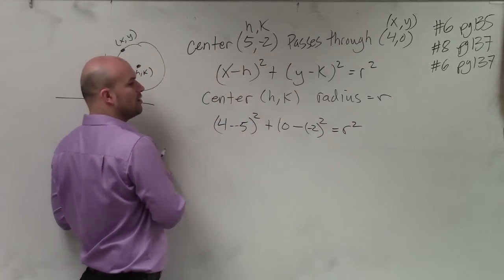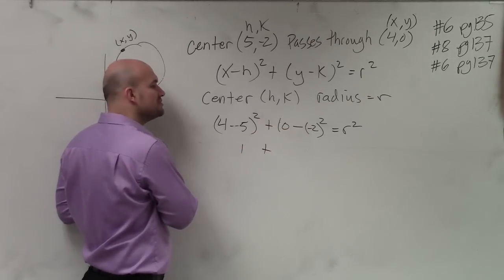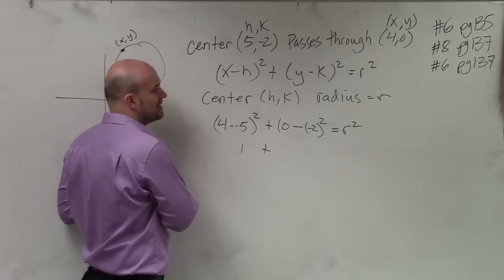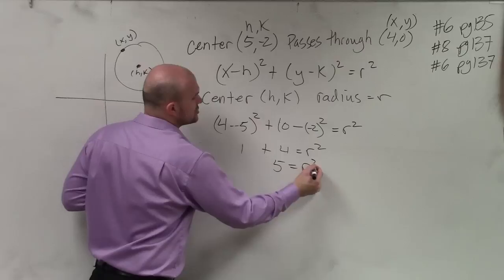Well, 4 minus 5 is negative 1. Negative 1 squared is 1. Plus 0 minus negative 2, so positive 2 squared, equals r². 1 plus 4 equals r². 5 equals r².